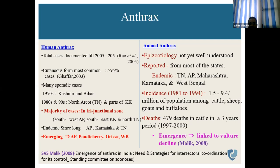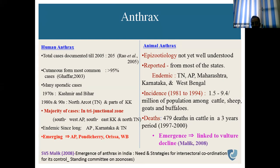Animal anthrax is endemic in Tamil Nadu, Andhra Pradesh, Maharashtra, Karnataka, and West Bengal. Incidence from 1981 to 1994 was 1.5 to 9.4 per million population among cattle, sheep, and buffaloes, with 479 cattle deaths over 33 years. The emergence of anthrax is linked to a vulture decline — since vultures feed on dead animals, their decline means dead and decomposing carcasses remain, serving as a source of anthrax spores. These are findings of S.V.S. Malik, 2008, a reputed scientist of IVRI.